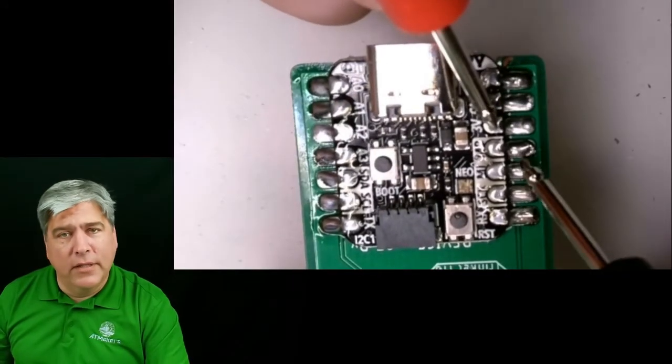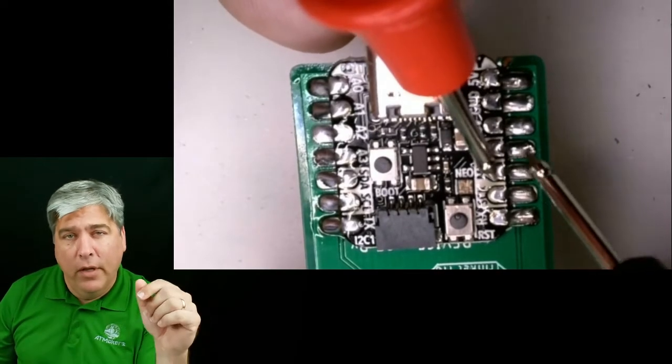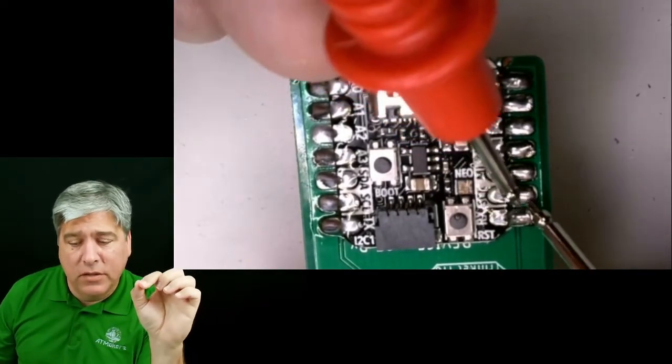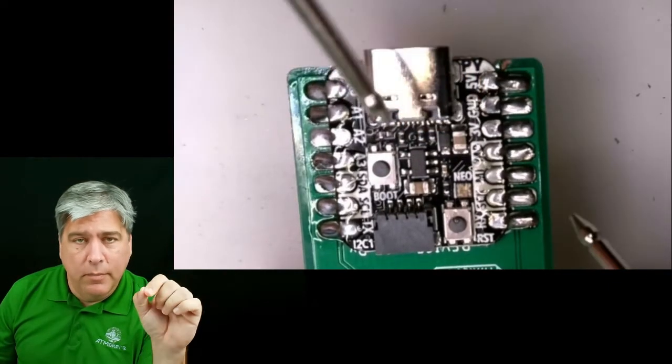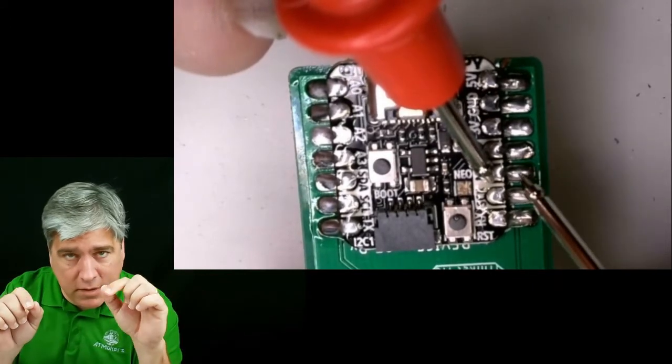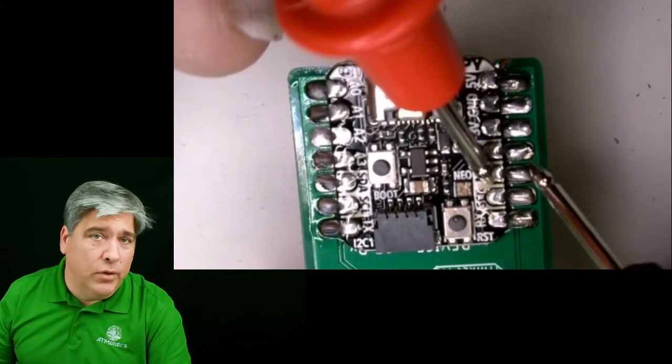Just like with the headers, you can use your continuity tester to test both whether or not you have shorts between the pads, but also you can test whether or not you have a good connection between the pad on the cutie pie and the pad on the board by just touching them together, making sure you have a good tone.